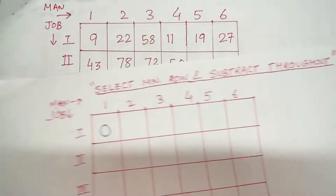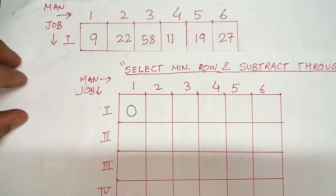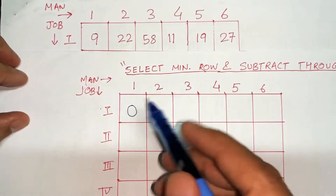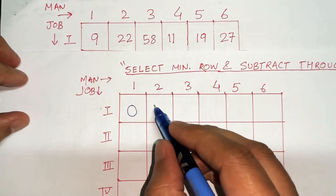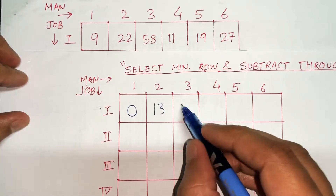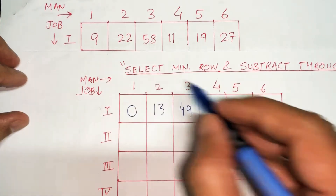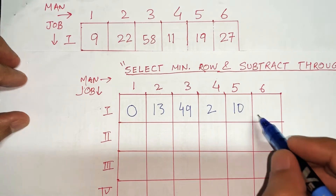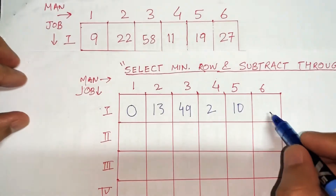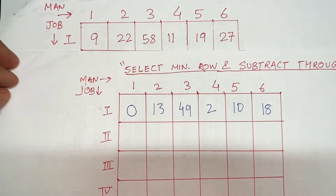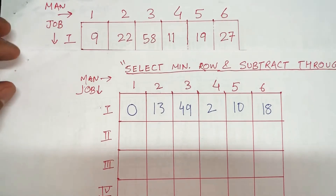Let's start with the first row. The minimum in the first row is 9, so I am going to subtract 9 throughout: 9-9=0, 22-9=13, 58-9=49, 11-9=2, 19-9=10, 27-9=18. So the first row is done. Select the minimum of the row and subtract it throughout.